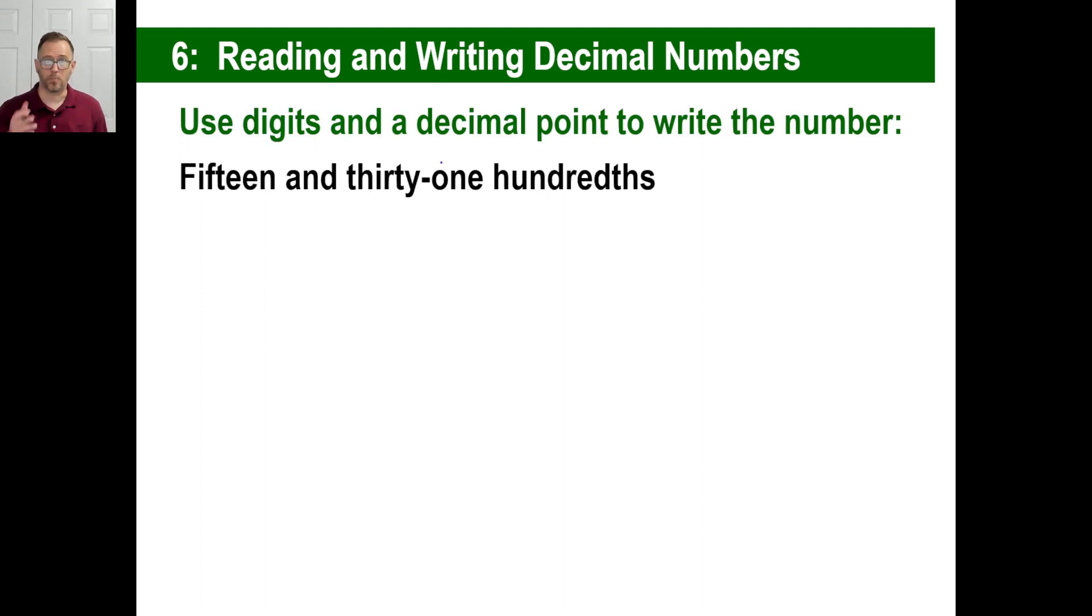Now let's go backwards and write this, which is in English, to numerals. So I have 15, and indicates a decimal, 31 hundredths, 31, there we go.